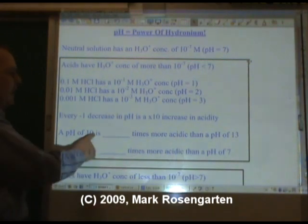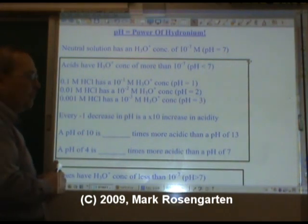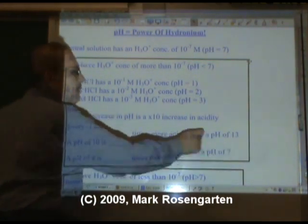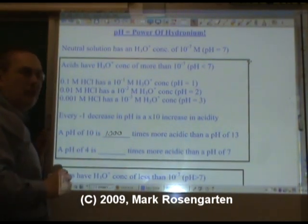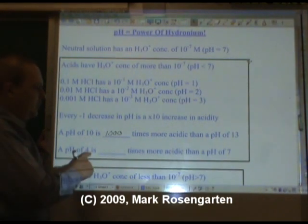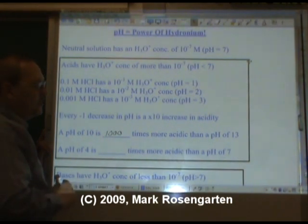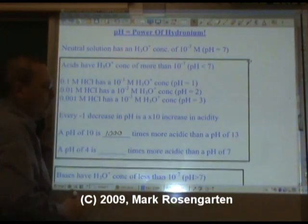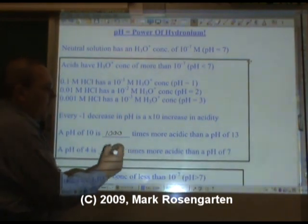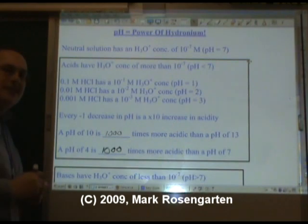So a pH of 10 is how many times more acidic than a pH of 3? Well, that would be 3 powers of 10 difference, 1 followed by 3 zeros, 1,000 times more acidic. And a pH of 4 is how many times more acidic than a pH of 7? Same deal, 4 and 7 are 3 apart. That's 1 to the third power, or 1,000 times more acidic.